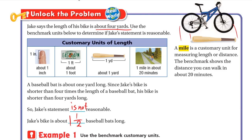To summarize: the inch is about the first knuckle of your finger, the foot is about the length of your ruler, and three rulers make one yard — which is about one meter. If you walk for about 20 minutes, that's about one mile. These are the customary units of length.